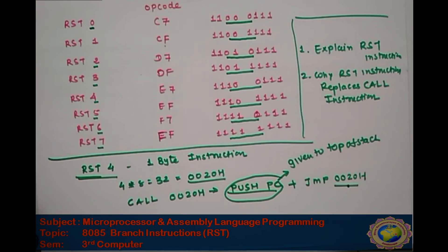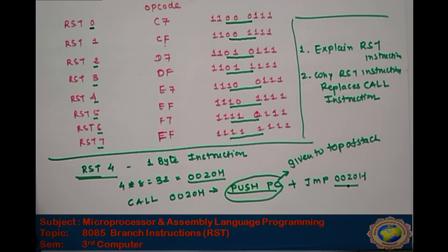This is the completion of unit number three. Further, we will study the different types of interrupts in unit number five, which we will start in the next lecture.